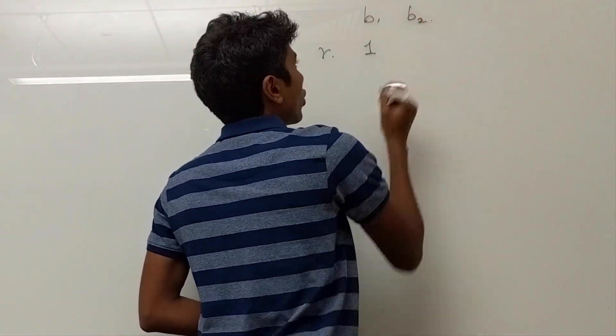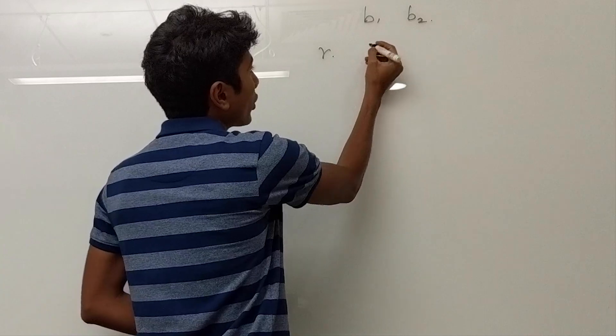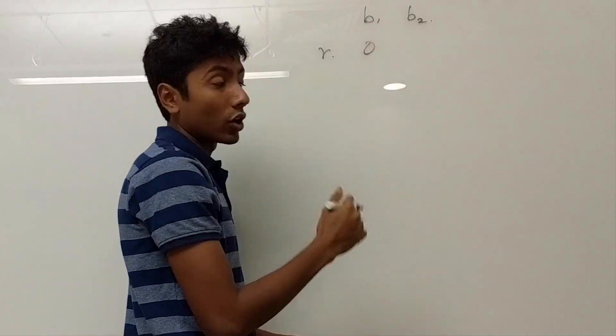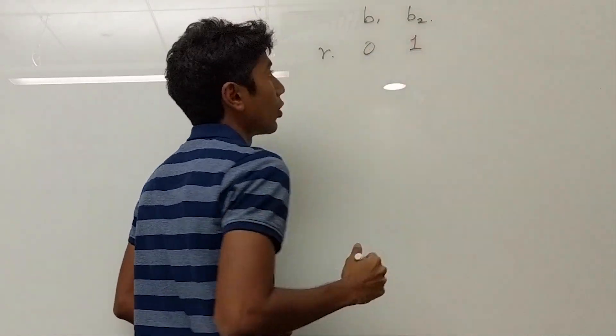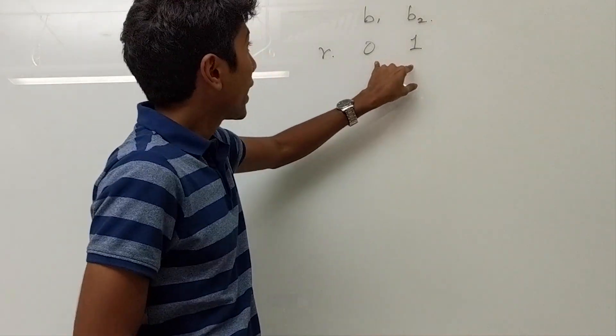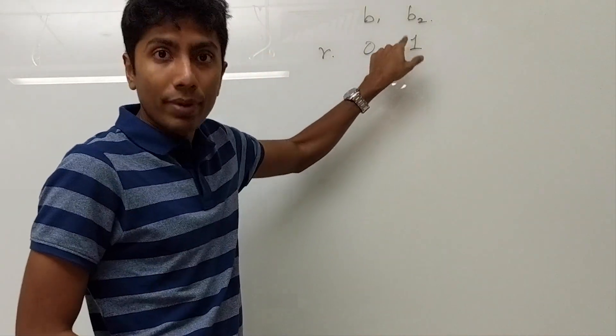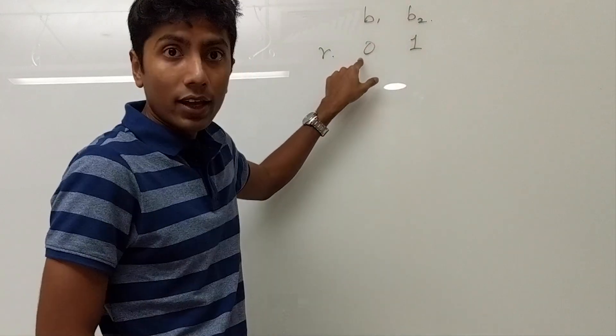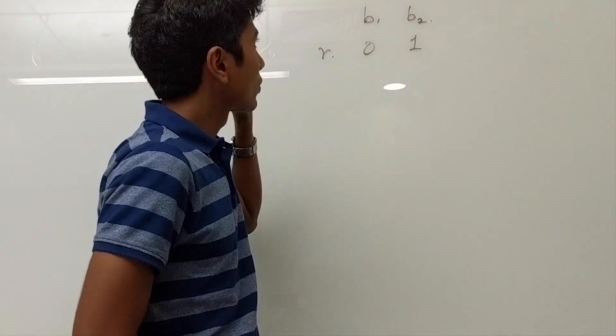Now, what I'm going to do is I'm not going to make it drink the first bottle. I'll just make it drink the second bottle. And with this, we can still find which bottle is poisoned because if the rat dies, then B2 is poisoned. If the rat doesn't die, then B1 is poisoned.